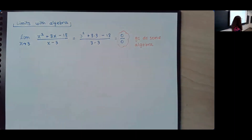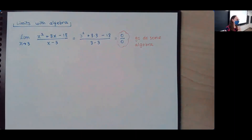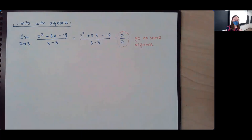In general, those three algebra things I'm going to be looking for are: factoring, multiplying by conjugates, and finding common denominators. Here, I'm thinking about factoring.